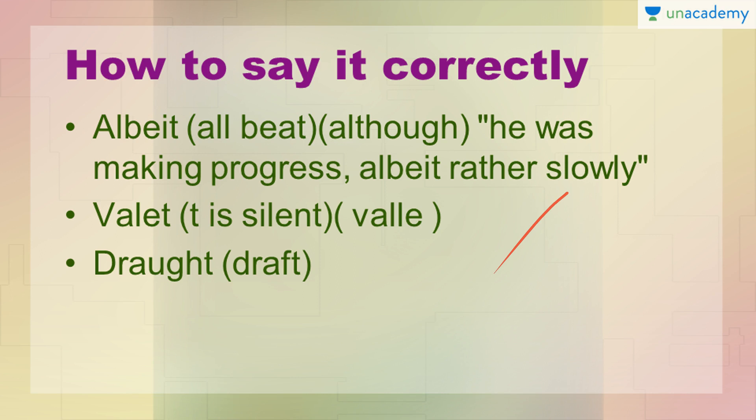The next one we have is 'valet.' In this word the T is silent, so we will pronounce it as 'vale.' The next is 'drought.' It is not 'draught' — it is 'drought.' It means sukha par jana — when there is insufficient rainfall in an area.